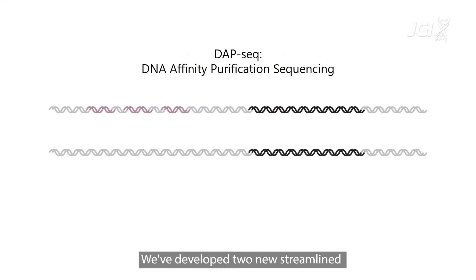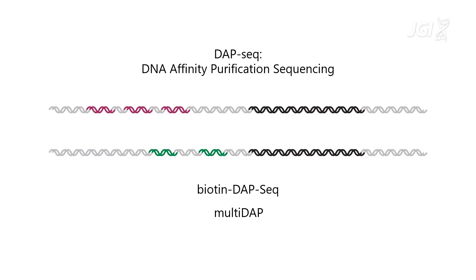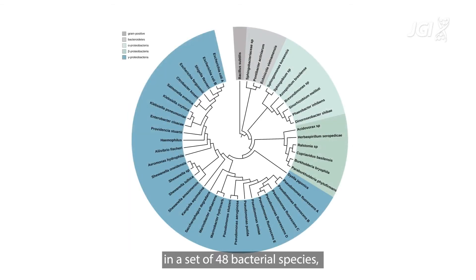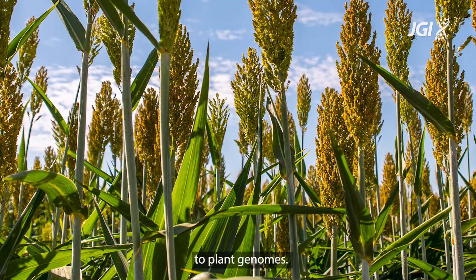We've developed two new streamlined versions of DAP-seq that we're calling Biotin DAP-seq and Multi-DAP. We demonstrated these new methods in a set of 48 bacterial species, but also showed how they can be applied to plant genomes.